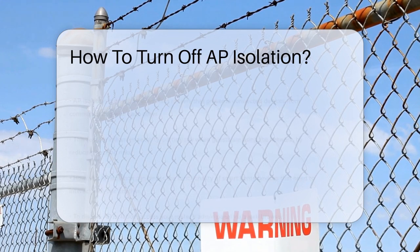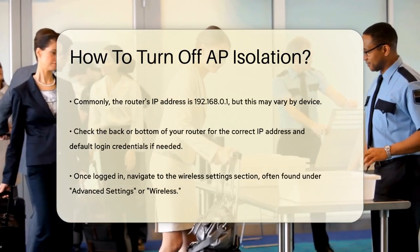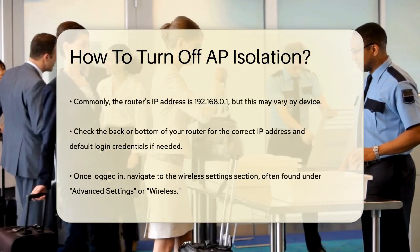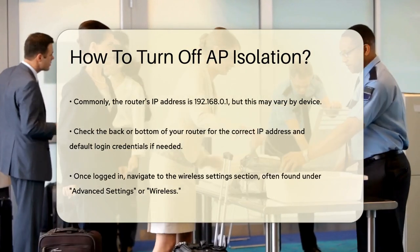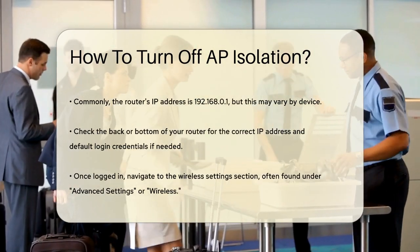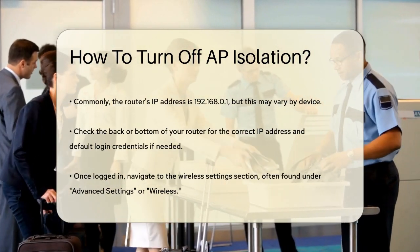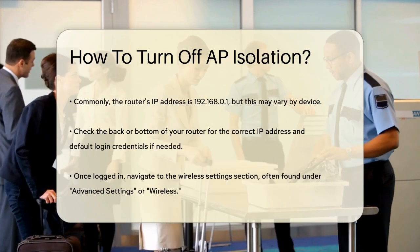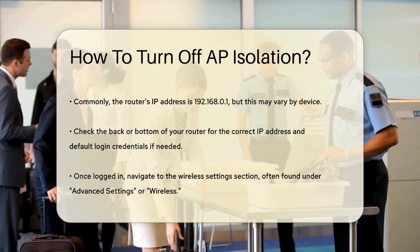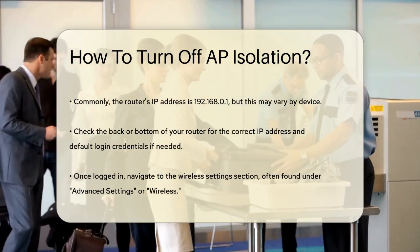However, it can be a real hassle if you have devices that need to talk to each other, like smart home gadgets. To disable AP isolation, you'll need to access your router's admin panel. This is usually done through a web browser.